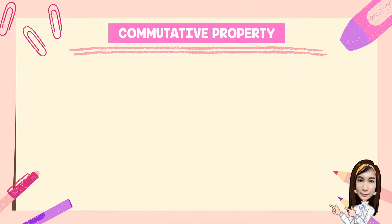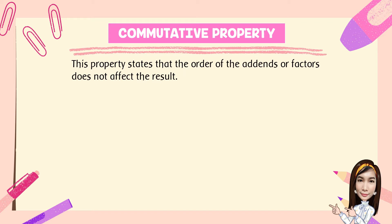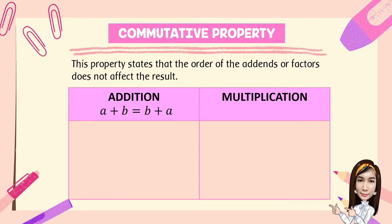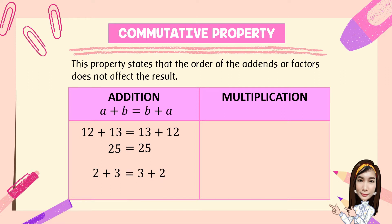Second, commutative property. This property states that the order of the addends or factors does not affect the result. For addition, we have a plus b is equal to b plus a. For example, 12 plus 13 is equal to 13 plus 12. To prove it, we just add and get the sum: 12 plus 13 is 25, and 13 plus 12 is also 25. Another example: 2 plus 3 is equal to 3 plus 2, so 2 plus 3 is equal to 5, and 3 plus 2 is also equal to 5.